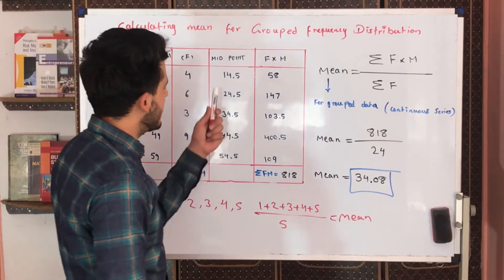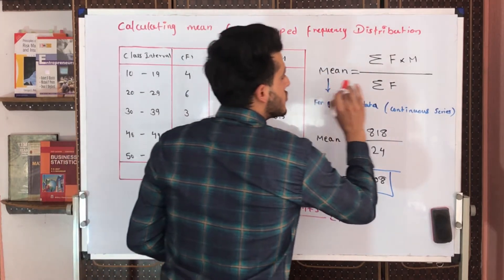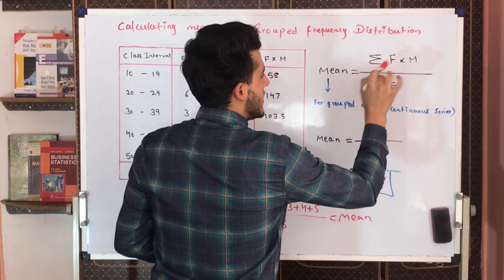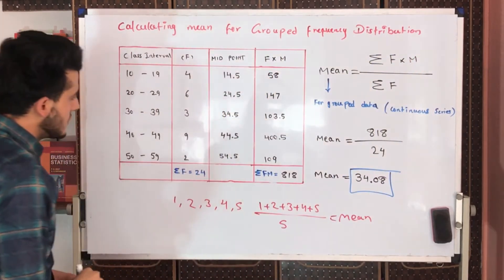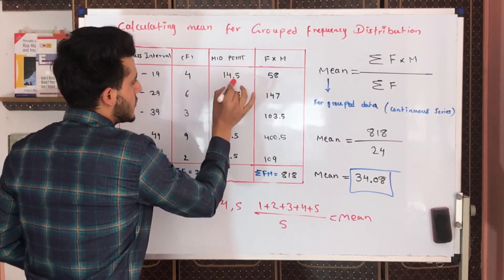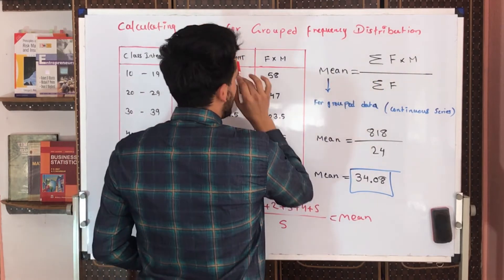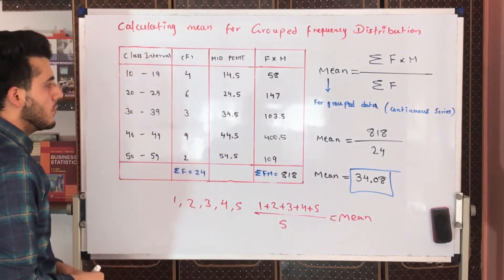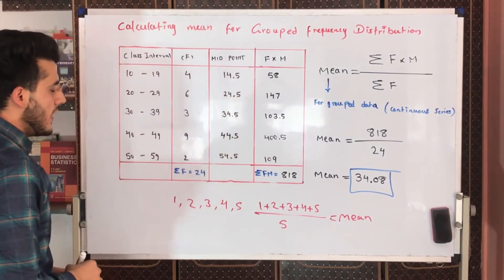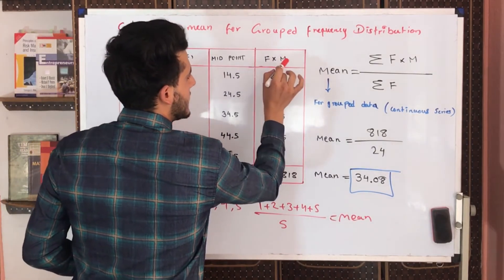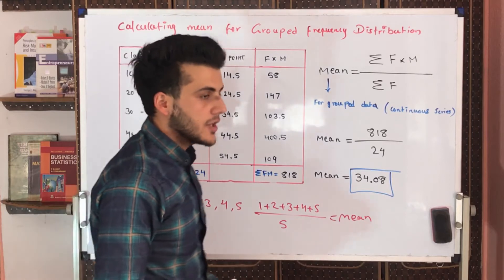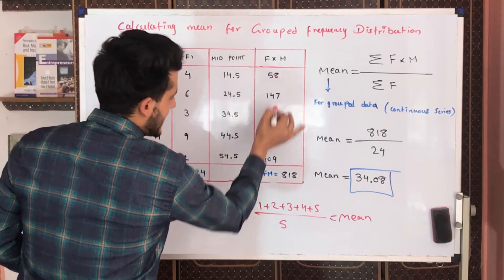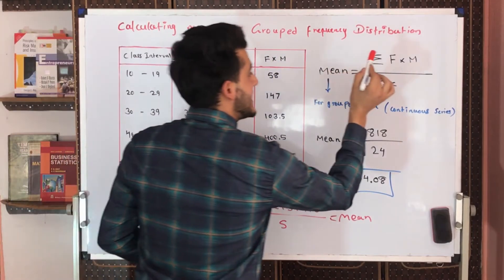After finding the midpoint, as the formula is saying, you have to have summation of frequency multiplied by midpoint. So in here what we do: we multiply 4 to 14.5 because f multiplied by midpoint. 6 multiplied by 24.5, 3 multiplied by 34.5, and the result is here - fm, frequency multiplied by midpoint.